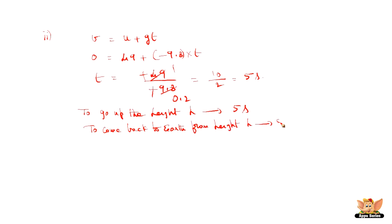We can find it from the equation v equals u plus gt, where v is zero, u is 49, and g is minus 9.8 because it was going up. So t equals minus 49 divided by minus 9.8, which gives us 5 seconds. To go up to height h takes 5 seconds, and to come back down also takes 5 seconds. Therefore, total time equals 5 plus 5, which is 10 seconds.